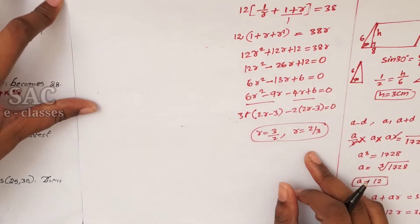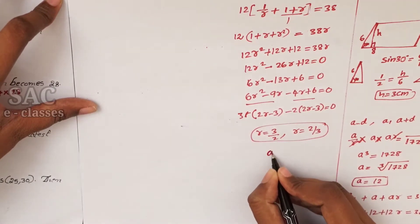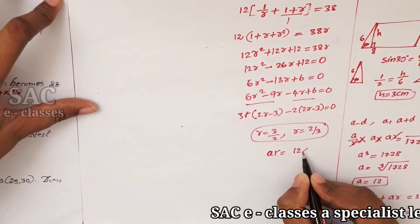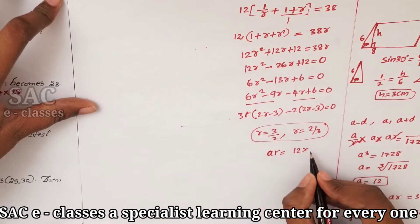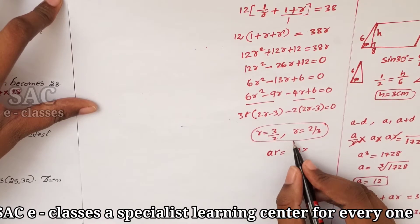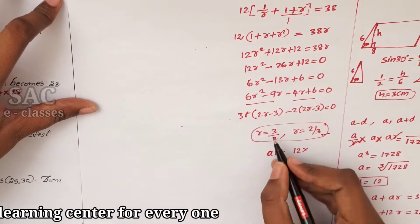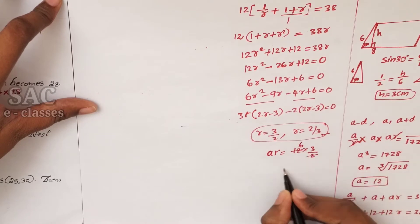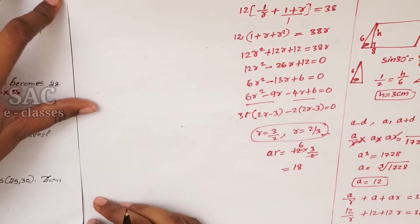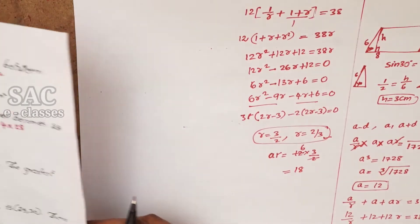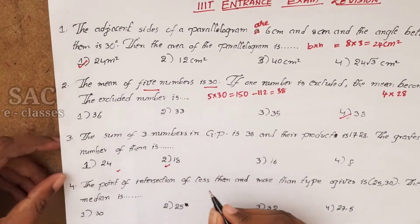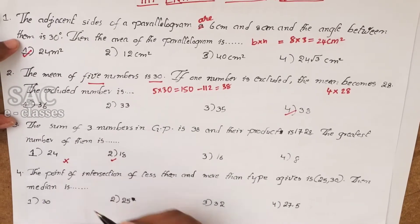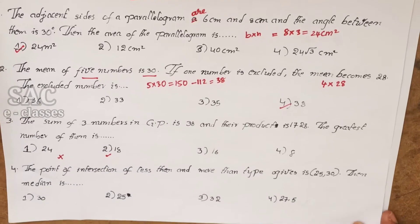We want the greatest term, which is AR. With A = 12 and taking R = 3/2 (greater than 1) for the largest term: AR = 12 × 3/2 = 18. So 18 is the required greatest number. We confirmed it rather than guessing 24.